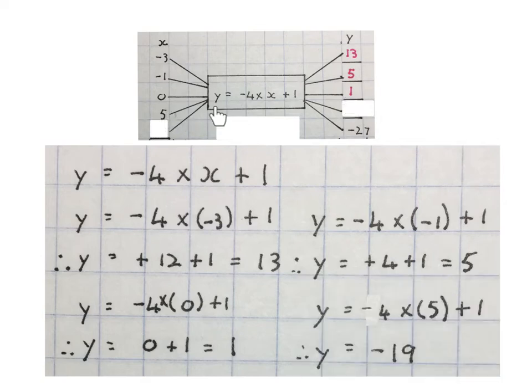Do the same with five. Substitute it into this equation in a bracket. Minus four times five is minus twenty, plus one is minus nineteen. Stop the video and get your brain around this.